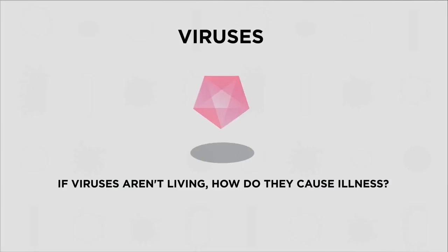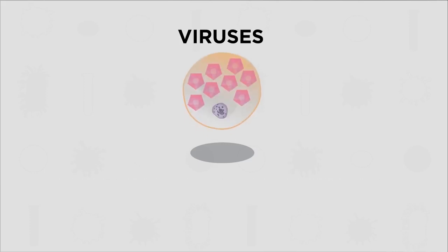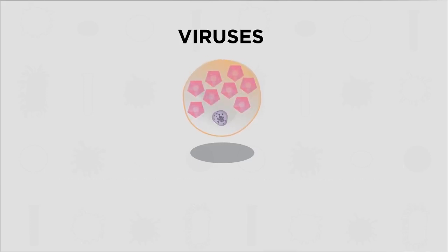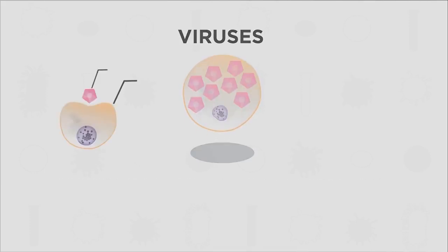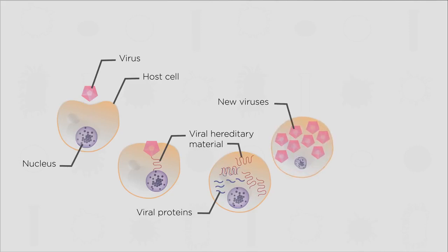So if viruses aren't living, how do they cause illness? Viruses are parasites. They can only reproduce in other living cells. They enter a host cell and hijack the host's genetic machinery, making copies of their own viral genetic material instead and producing lots more virus particles.